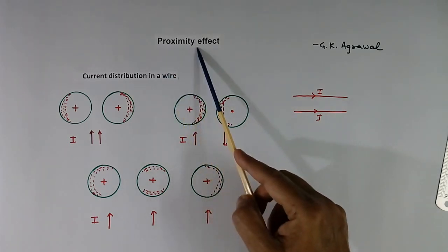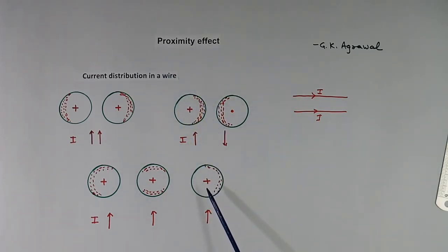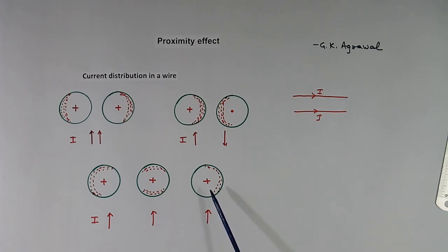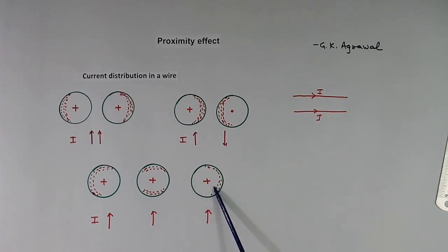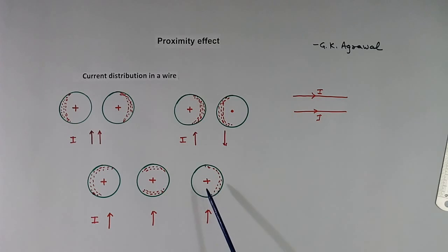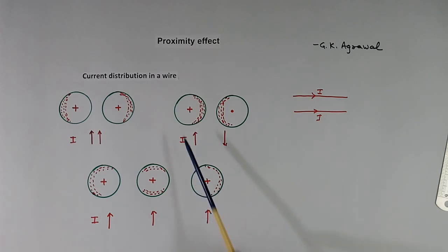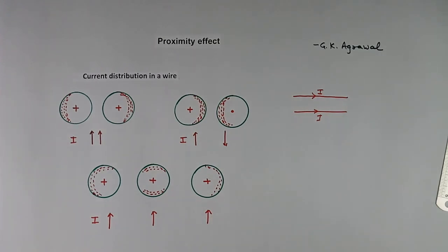This problem exists in SMPS transformers, because in an SMPS transformer the frequency of voltage and current is very high, so losses are more because of proximity effect. That is all for today.